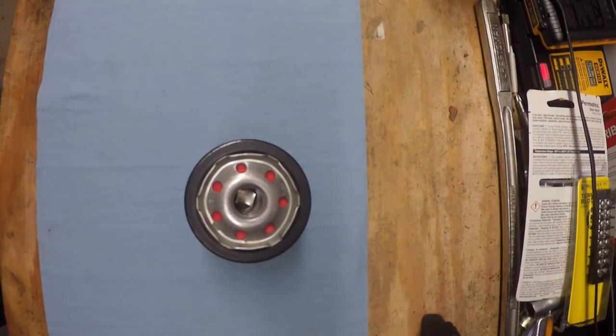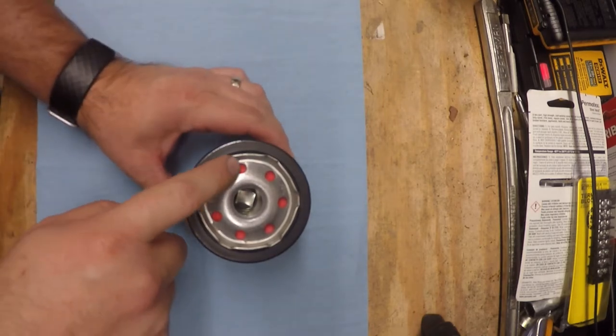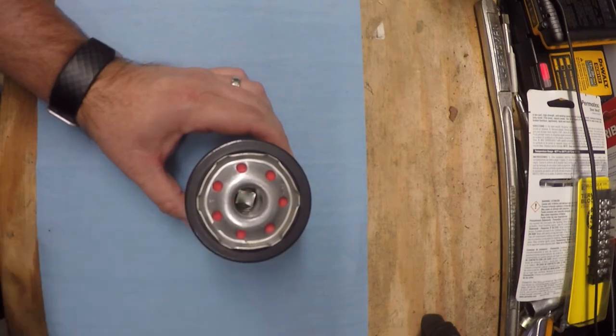So first of all, what does one of these filters do? Just like it sounds, an oil filter filters the engine oil in your car's engine. The oil enters in through these outside holes here and it comes out through the center hole that you see.